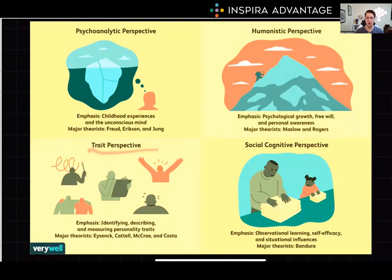The next thing I want us to talk about are type and trait theories. These perspectives describe personality through identifiable traits that carry characteristic behaviors. Examples of type theories include the ancient Greek humors, Sheldon somatotypes, type A and type B personalities, and the Myers-Briggs type inventory. On the other hand, trait theories involve things like PEN, which is psychoticism, extroversion, and neuroticism, and the Big Five: openness, conscientiousness, extroversion, agreeableness, and neuroticism, which can be remembered using the OCEAN mnemonic.